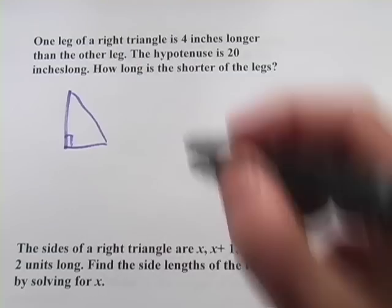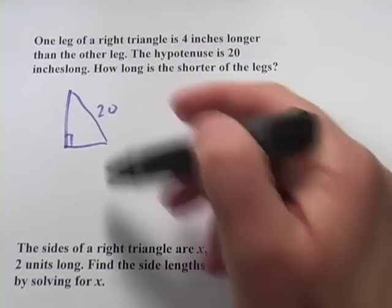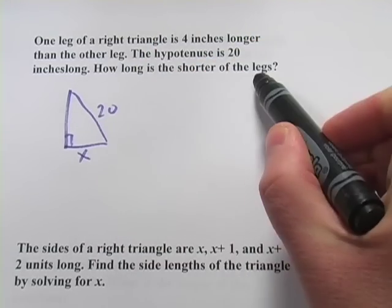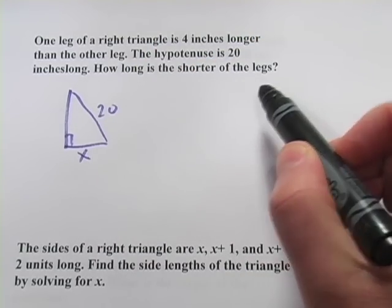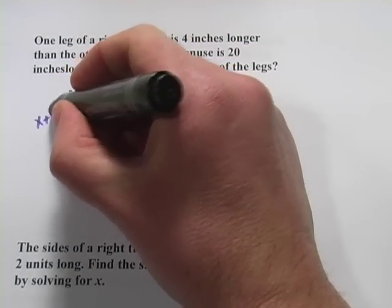So there's our right triangle, we've got a hypotenuse of 20. And then the other two sides are the legs, we'll call the short one x, and that's good because we're going to want to find that so we'll solve for x at the end. And the other one is 4 inches longer, so we'll call that x plus 4.